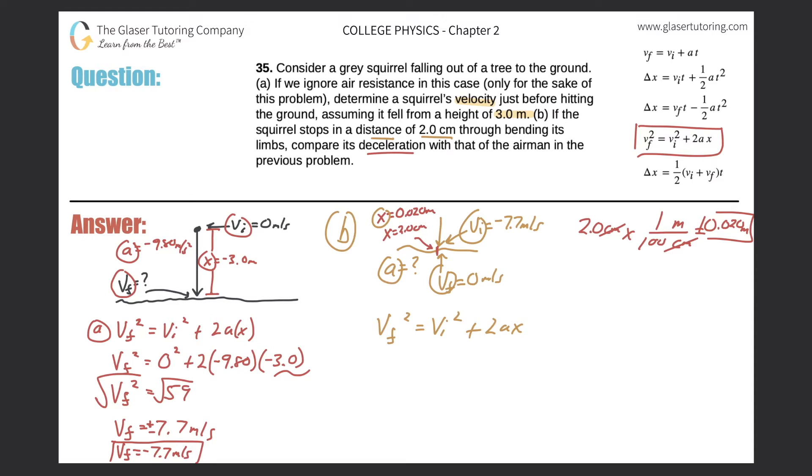The final velocity is 0. The initial velocity is negative 7.7. That's going to be squared. Plus 2 multiplied by my acceleration, which is what I'm trying to find. And now the displacement over which this acceleration occurred is going to be 0.020. Let's do some math. 7.7 squared comes out to 59.29, but I need only two significant figures. Therefore, it needs to be 59.